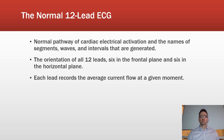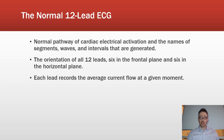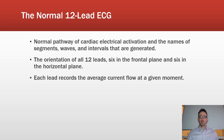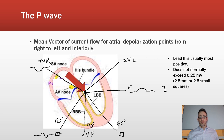The orientation of the 12 leads: the frontal plane contains the limb leads, covering superior, inferior, medial, and lateral views. The six horizontal plane leads are the chest leads, looking anterior to posterior. Each electrode records an average current going through the heart at a given moment.